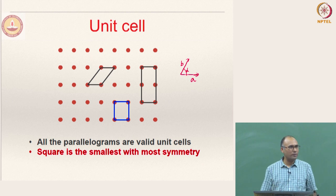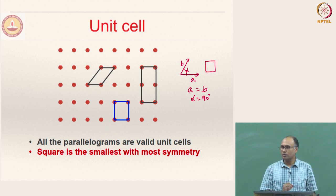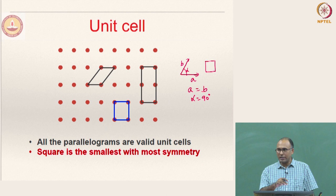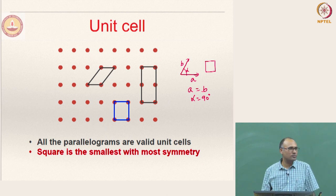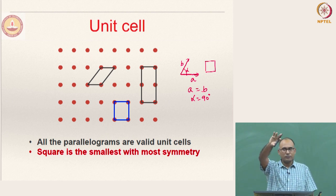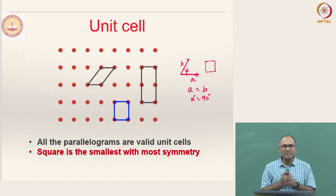You can define as many unit cells as you want. For example, if A equals B and alpha equals 90 degrees, you get a square unit cell. If A is not equal to B and alpha equals 90, you get a rectangular unit cell. When you take this geometry and translate it in the lattice vector direction — both x and y in 2D — it should fill the entire space without leaving any voids.